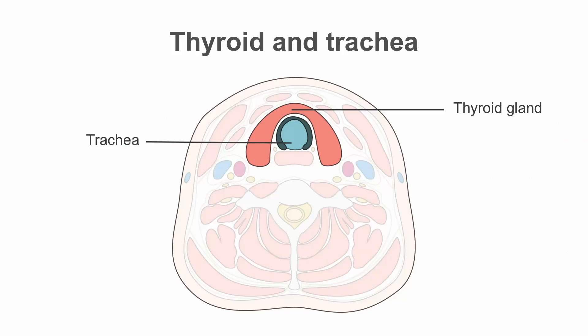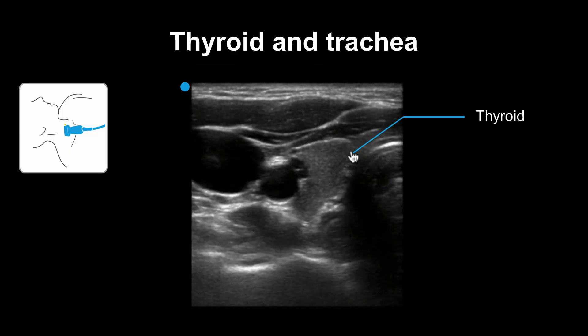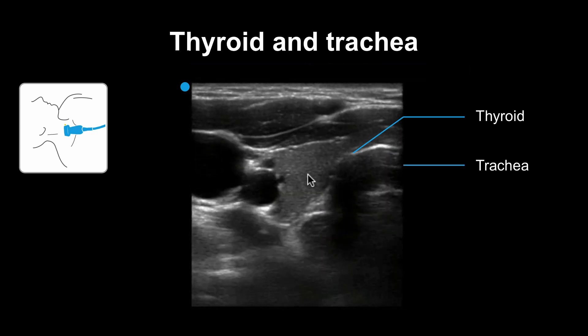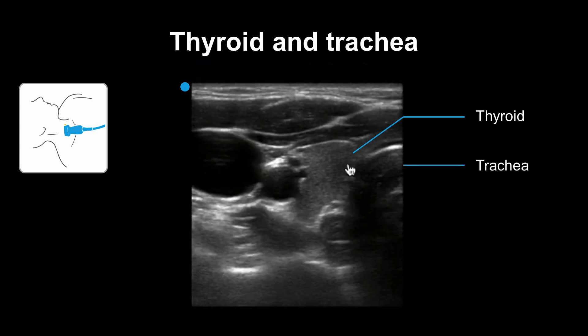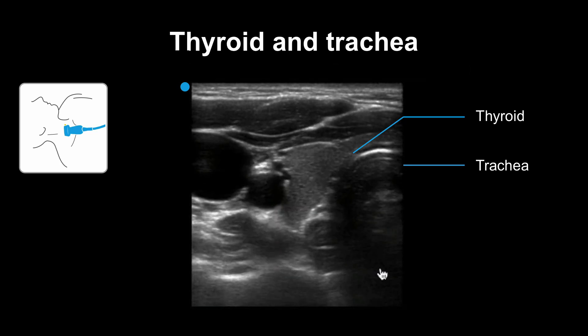This cross-sectional image of the anterior neck shows the relationship of the thyroid and trachea to the internal jugular vein and the common carotid. The solid structure here is the thyroid. The trachea is just behind with cartilage rings and air within it that causes shadowing downward.